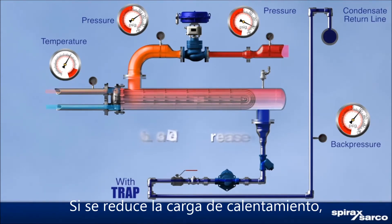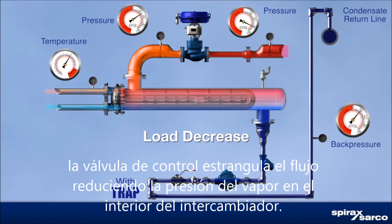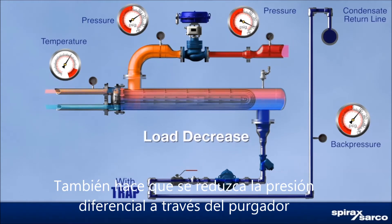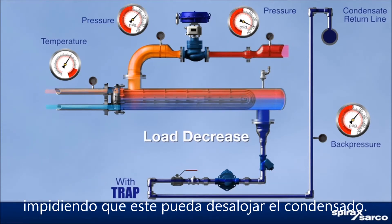Under reduced heating load, the control valve throttles down, reducing the steam pressure inside the heat exchanger. This also reduces the differential pressure across the steam trap, making the trap unable to remove the condensate.